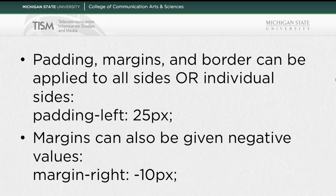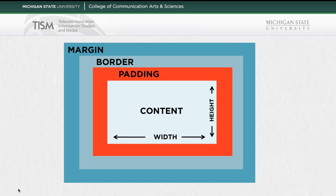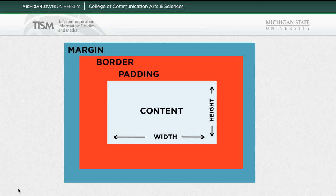The same thing is true of margins, but they have one special thing: they can be given a negative value. So instead of pushing things away, they pull them closer. If you have margin-right of 10 pixels, it will push things away by 10 pixels. If you have margin-right of negative 10 pixels, it will pull things closer.